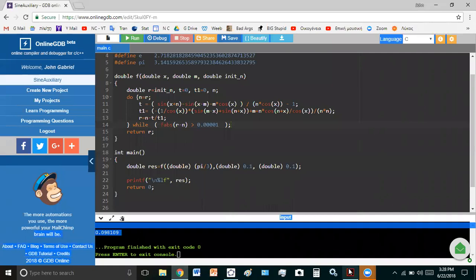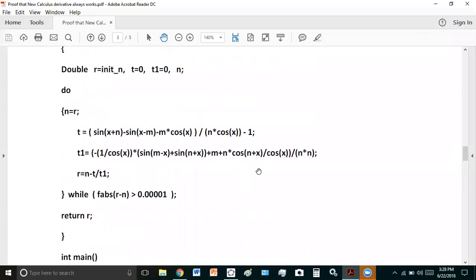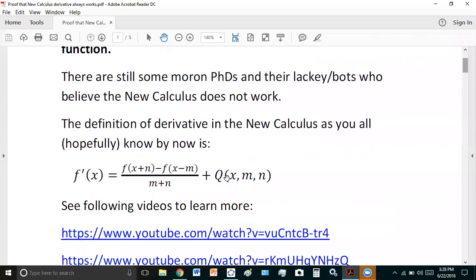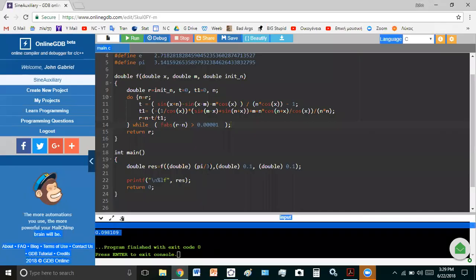and plug it into this equation, which is the calculus derivative, this equation that I give you right at the beginning. Just plug it into here, and you'll see that this will give you the gradient at the point x, which as we see in this particular scenario is pi divided by three.